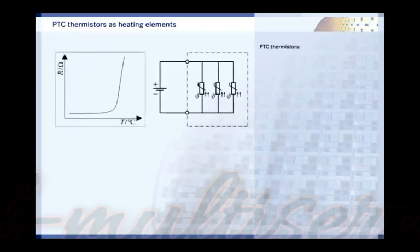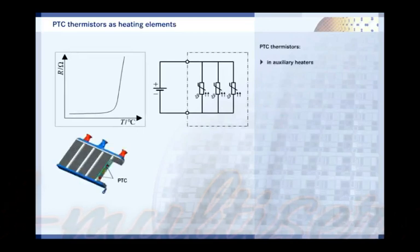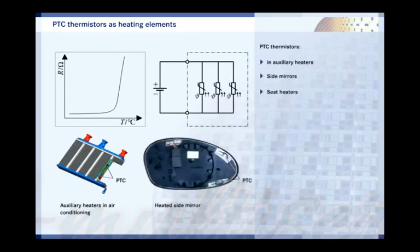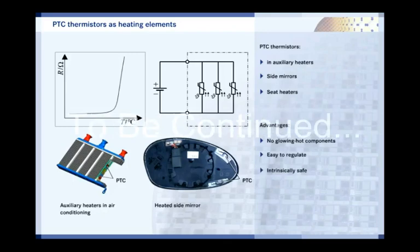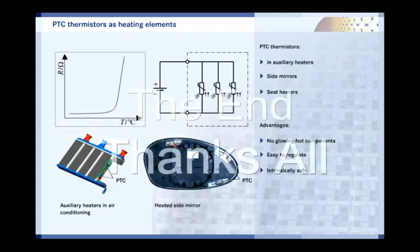PTC thermistors are also used as heating elements. For example, in auxiliary heaters for air conditioning, in heated side mirrors, or in seat heaters. They have many advantages over heater filaments. No red-hot components where dust can smoulder, easy temperature regulation, and intrinsic safety. The last point above all is important. Because PTC thermistors curb the current at high temperatures, they act as their own safety fuse.